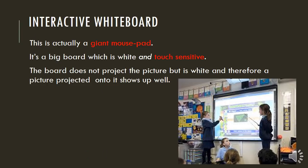An interactive whiteboard is actually a giant mousepad. It's a big board which is white and touch sensitive. The board does not project the picture — it's just white, so we use a projector to shine a picture onto it. But it's actually an input device because it's like a giant touch screen.